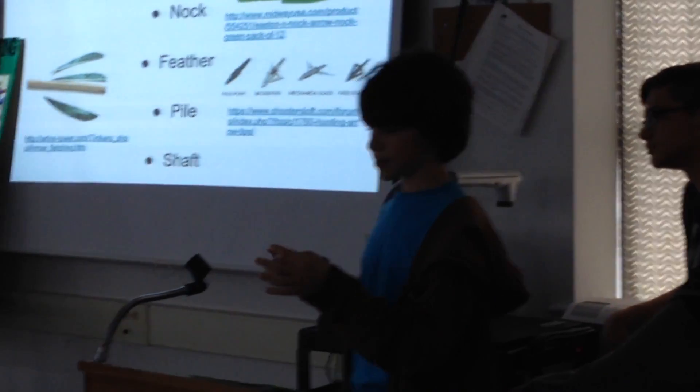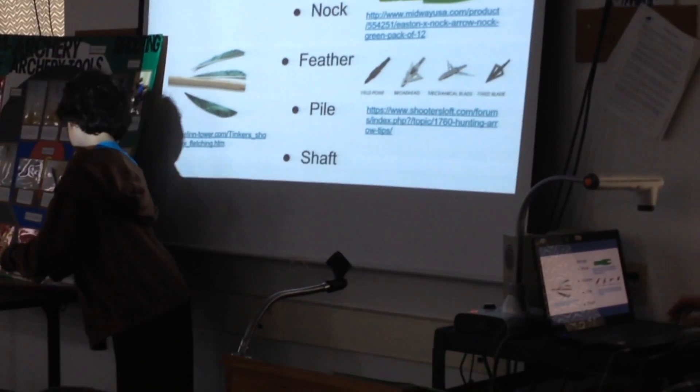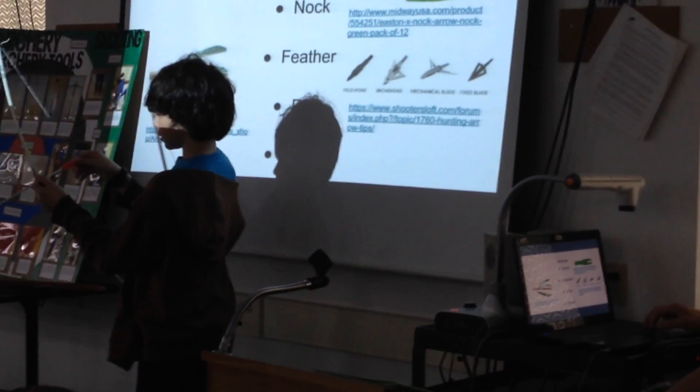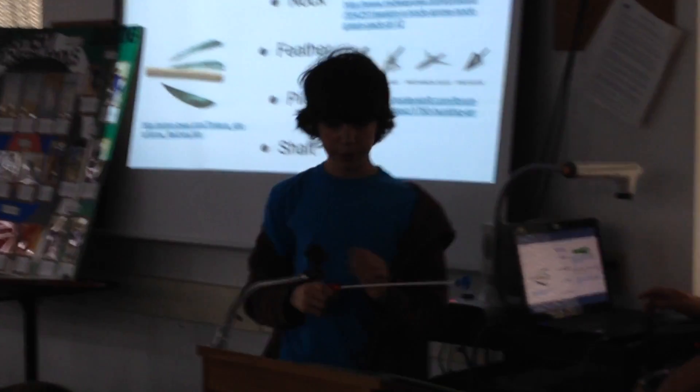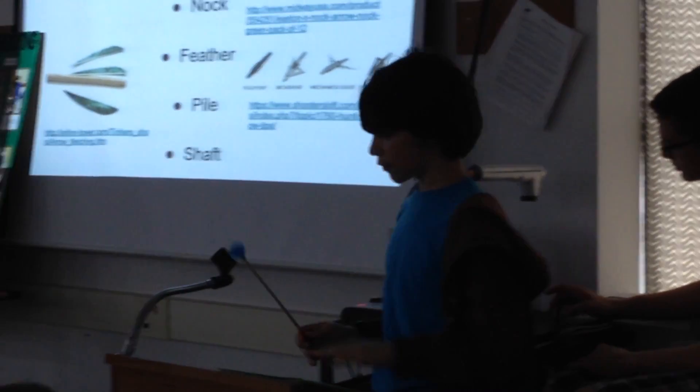The nock is this back here that goes into the string of the bow, and it's called nocking it when you put the nock into the string like that. The feathers help with it going through the air - they make sure that it can fly straight and it typically has three feathers on it.